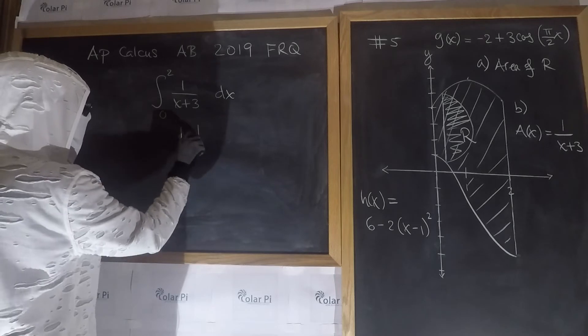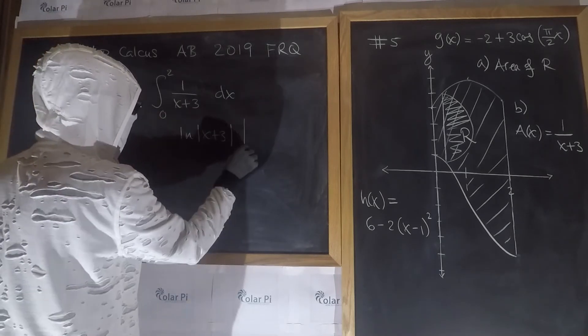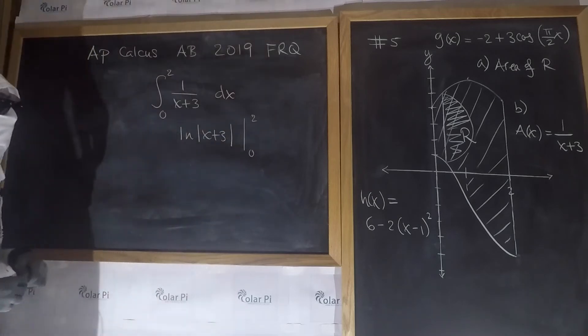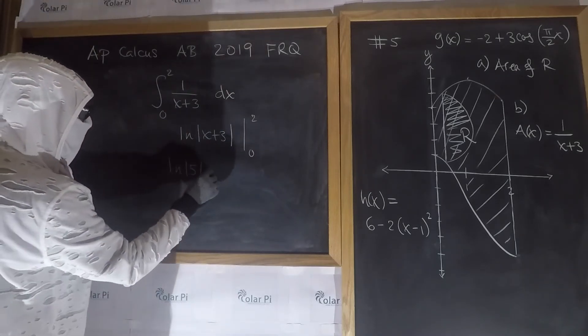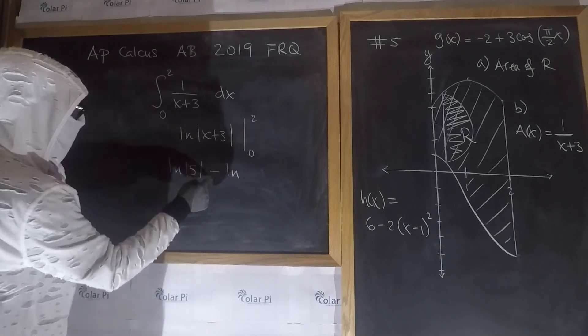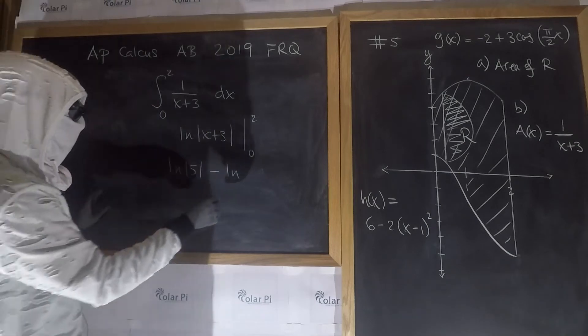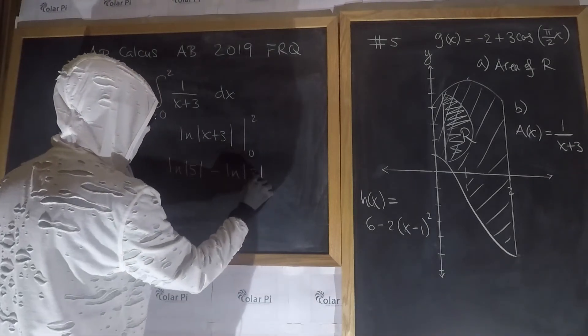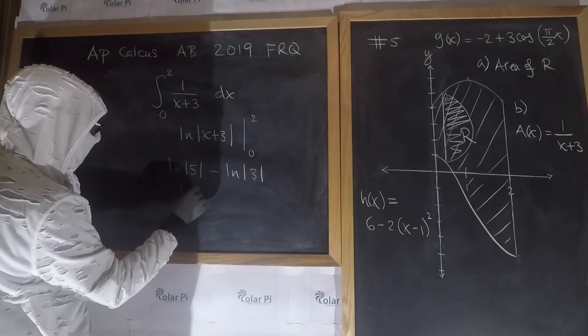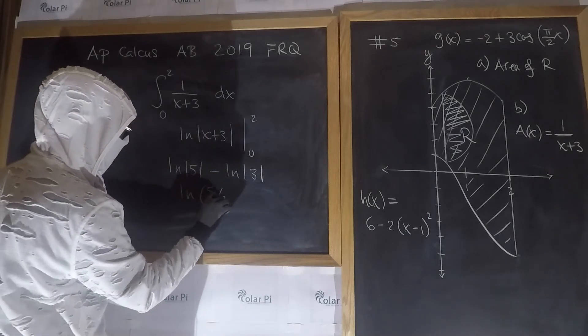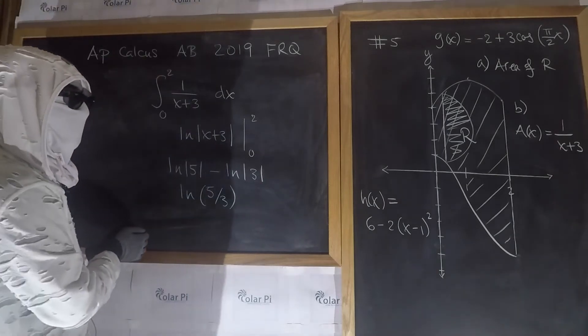So that's 1 over x plus 3 dx, and of course going from 0 to 2. The antiderivative of this is the natural log of x plus 3, and we evaluate this from 0 to 2. If we plug in 2, we get the natural log of 5. If we plug in 0, we get minus the natural log of 3, which is the natural log of 5 over 3. So that's it for B, and on to C.